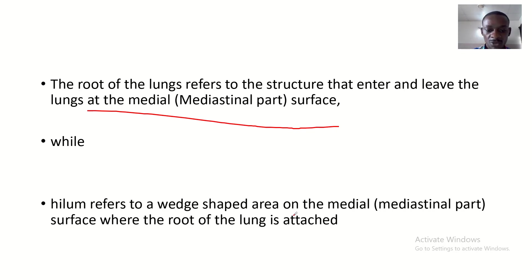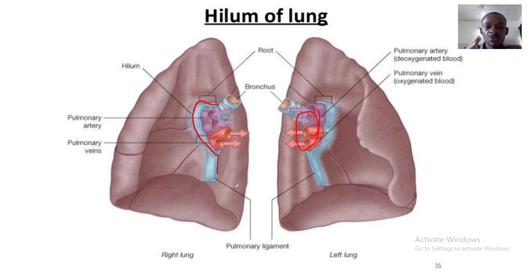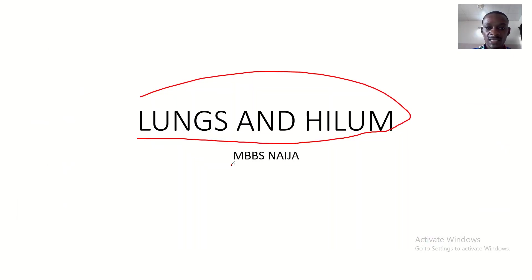The hilum refers to an area on the medial side of the lungs, while the roots refer to the structures themselves. Both are on the medial side, but one is an area and the other is the structures. The hilum is the tissue or ligaments surrounding the roots, while the roots of the lungs are the structures that enter and leave the lungs on the medial side.